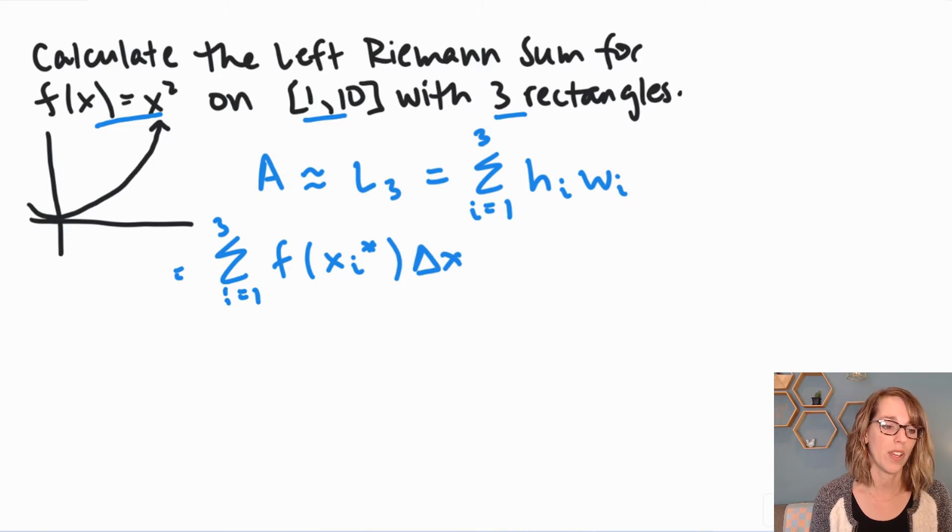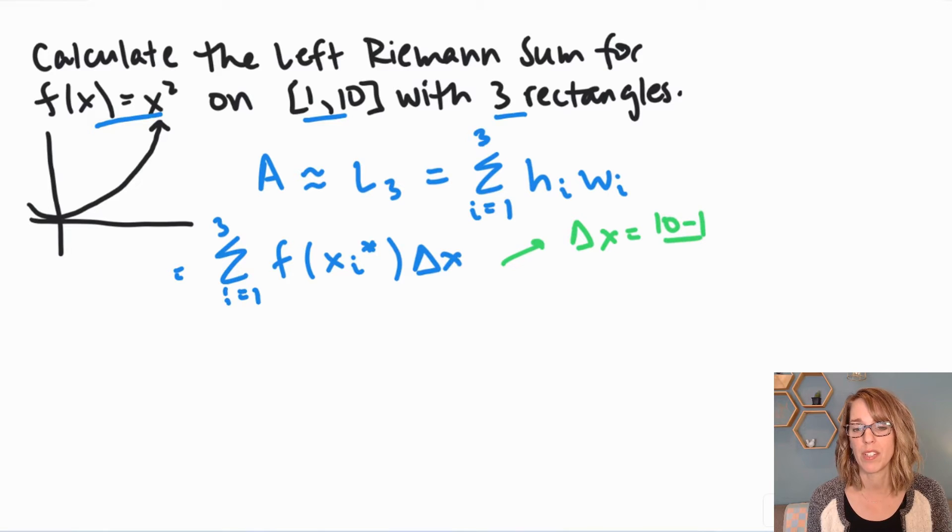Let's go ahead and start with delta x. Delta x is the width. I'm taking that interval from 1 to 10 and dividing it into 3. So I'm going to do 10 minus 1 divided by 3. That's going to be 9 divided by 3, which is 3. So that interval width is going to be 3, which tells me that I've got endpoints starting at 1, add 3 and I get 4, 7 and 10.